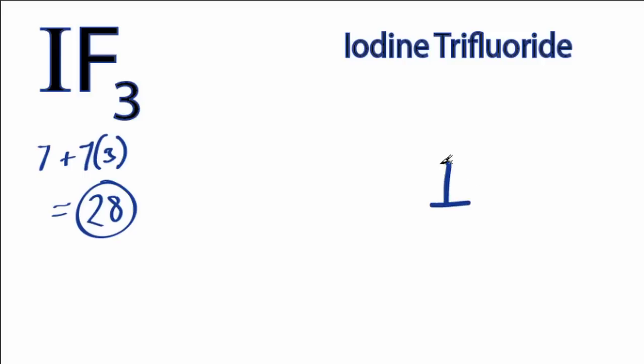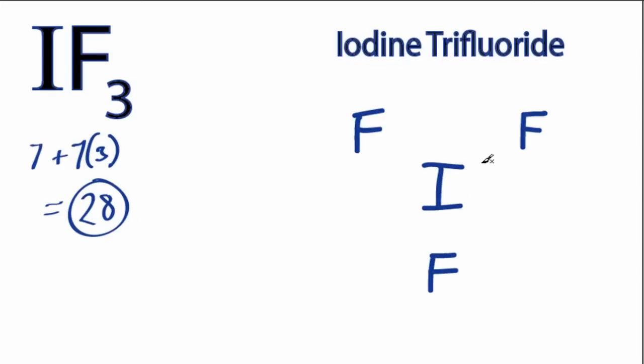Iodine is the least electronegative, so we'll put it in the center, and then we'll put our fluorines on the outside. We'll put a chemical bond between the iodine and the fluorine atoms like this.